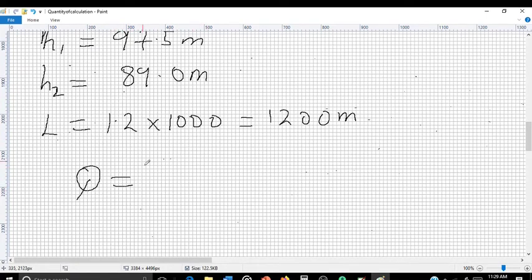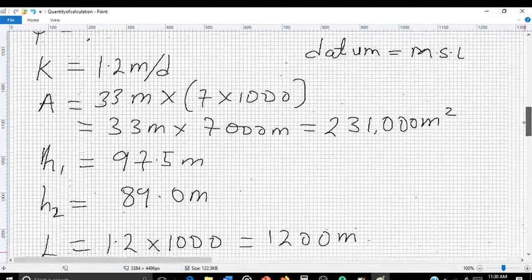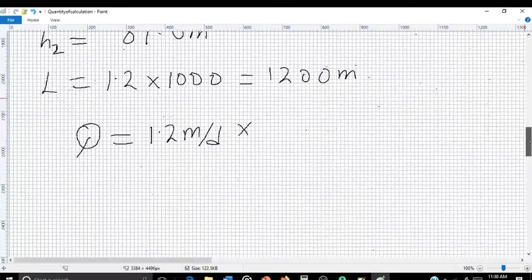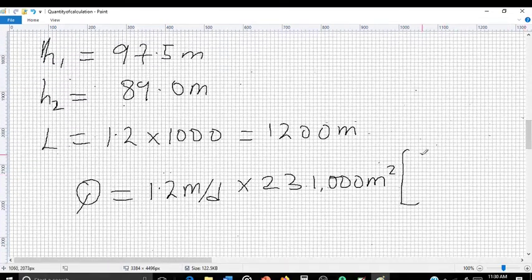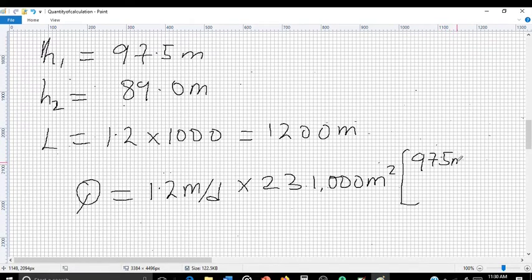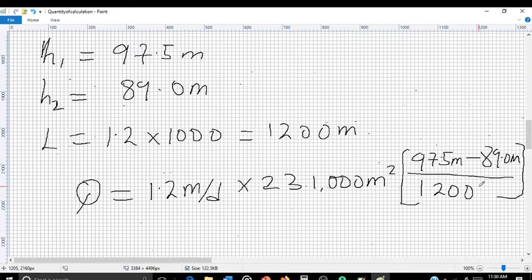Now we are going to substitute the above values into the formula. So we have K, which is 1.2 meters per day, times the area, which is 231,000 meters squared, open bracket, 97.5 meters minus 89.0 meters, close bracket over 1,200 meters.